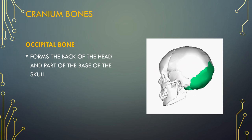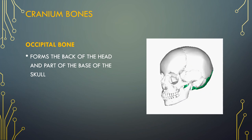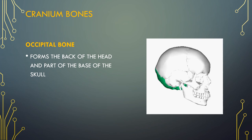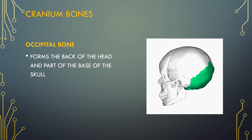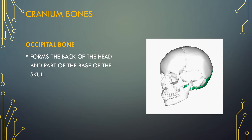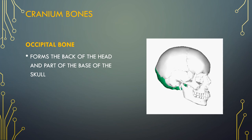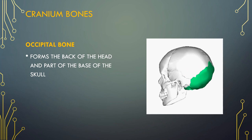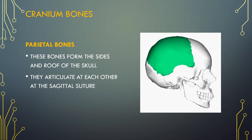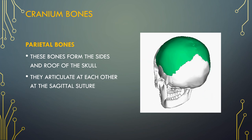Your skull provides structure to your head and face while also protecting your brain. The bones in your skull can be divided into cranial bones, which form your cranium, and facial bones, which make up your face. There are eight cranial bones each with a unique shape. The occipital bone is considered a flat bone, meaning its primary function is either protection or to provide a broad surface for muscle attachment. It forms the back of the head and part of the base of the skull. The parietal bones form the sides and roof of the skull and top of the head.